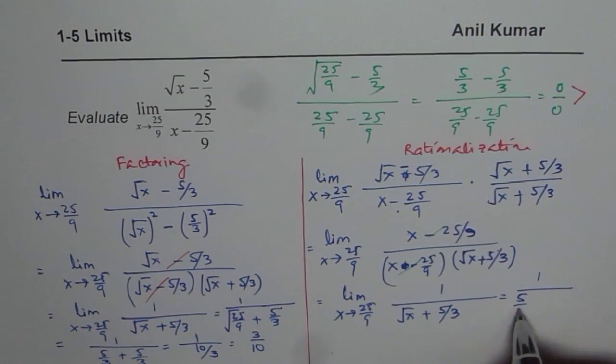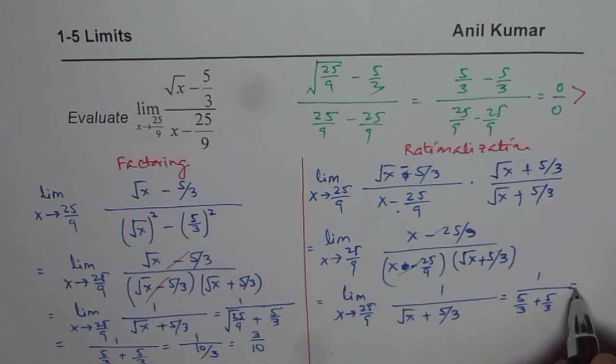So you get the same result. Now you can substitute 25 over 9 here, for square root of x you get 1 over 5 over 3 plus 5 over 3 and that gives you the answer which is 3 over 10, correct?